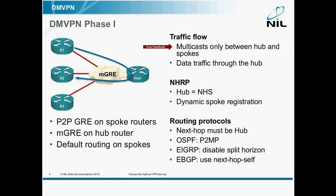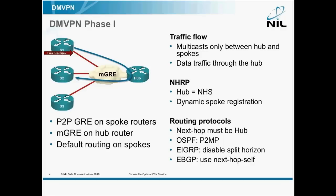Importantly, multicasts are exchanged only between the hub and the spokes, so routing protocol updates or OSPF hellos are not burdening the other spokes. NHRP is used, but only as a dynamic registration tool so that the spoke can register with the hub. Spokes themselves don't need NHRP — it's needed by the hub so it can collect the spoke tunnel endpoints dynamically, so you don't have to configure anything on the hub.